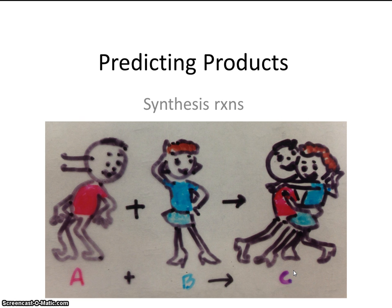So a synthesis reaction isn't always too difficult to recognize. Usually you'll have two things coming together to make one thing. Often times, it's an element plus another element will come together to make a compound.